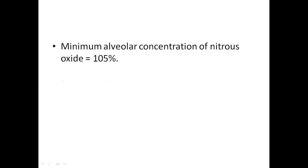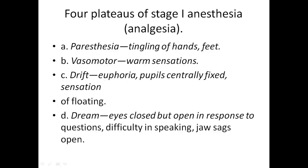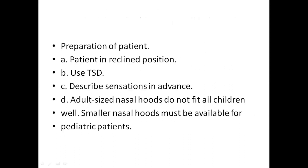The four planes of anesthesia at the analgesic stage are: first, paresthesia — tingling of the hands and feet; then vasomotor action — warm sensations; then drifting-like euphoria, pupil central fixation, sensation of floating; then dreamlike state — eyes closed but open in response to questions, difficulty speaking, and jaw relaxed. For patient preparation, the patient is placed in a reclined position, using the tell-show-do technique, describing sensations in advance to the patient.